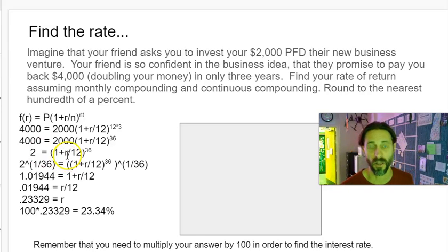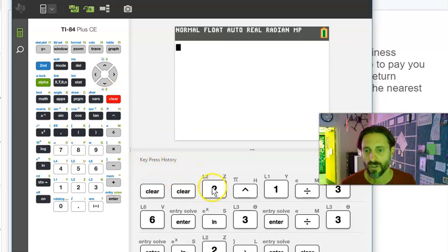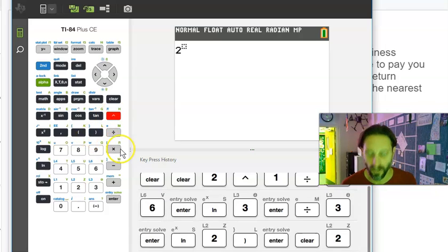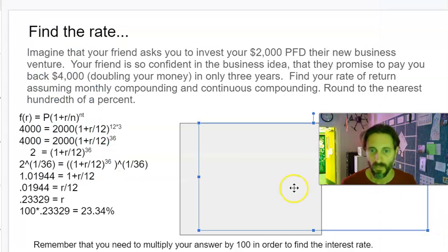Now how do we solve this? If something is raised to the 36th power, this doesn't involve a log or natural log but means taking the 36th root of both sides. On my calculator, I'm going to take 2 to the power—I like parentheses—1 divided by 36. Boom, you can see 1.0194, and this number is irrational, it goes on for a really long time if not forever.